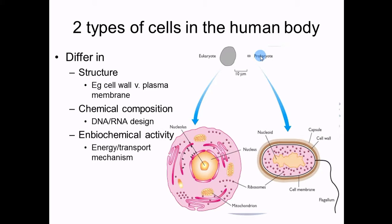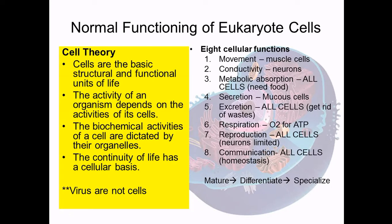The first thing to remember is eukaryotic versus prokaryotic cells and their specific differences. The second is that normal functioning of eukaryotic cells depends on what we call cell theory and the eight basic functions. Cell theory states all cells are the basic functional units of life — anything smaller than a cell isn't alive, hence viruses are not cells. The activity of the organism depends on all its cells. When cells fail, tissues fail. Tissues fail, systems fail. Systems fail, organ systems fail, and the organism fails. When we treat medically, we treat at the level of the cell.